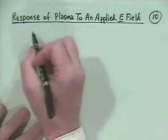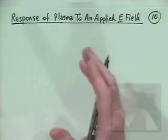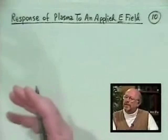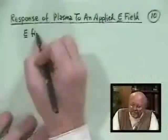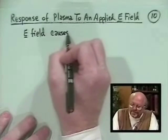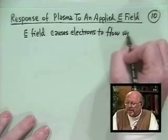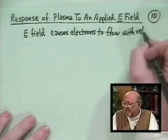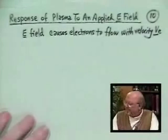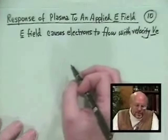What happens is that the electric field will cause the electrons to accelerate. But Coulomb collisions are going to try to hold the fluid back. Ions are going to be more or less stationary because they don't respond to the electric field — they're too massive. So the electrons try to move, Coulomb collisions pull them back, causing the electrons to flow with some velocity V sub E.